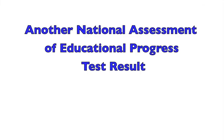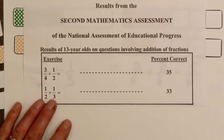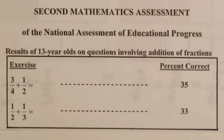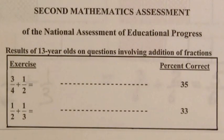Let's look at another national assessment of educational progress test result. This is also for thirteen year old students. Thirty-five percent were able to get the correct answer to 3/4 plus 1/2. Thirty-three percent were able to obtain the correct answer to 1/2 plus 1/3.